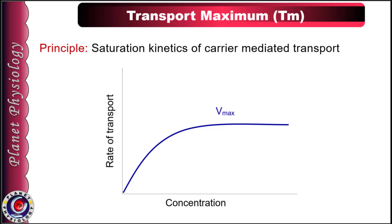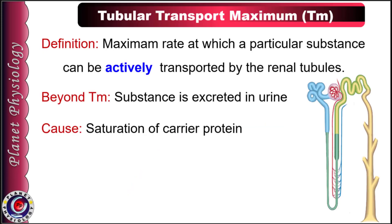With this background, let's study the tubular transport maximum in detail. Tubular transport maximum is defined as the maximum rate at which a particular substance can be actively transported by the renal tubules. Beyond this value, the substance is excreted and appears in the urine. The transport maximum is due to saturation of carrier proteins by the solutes.